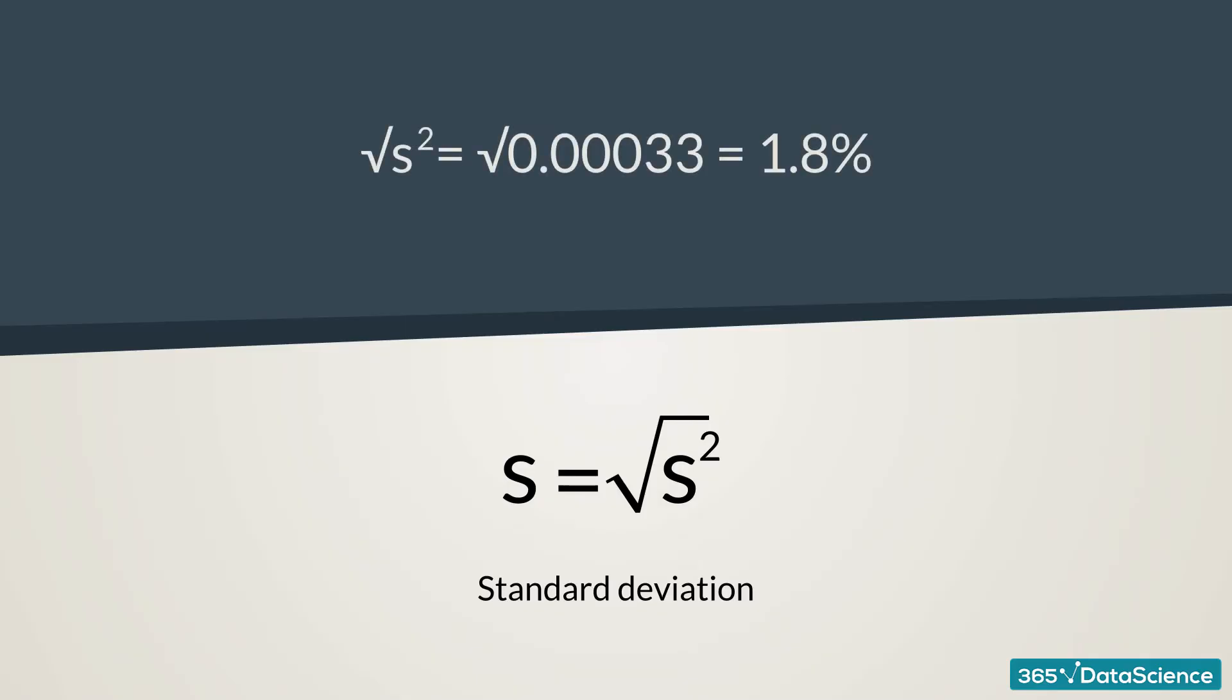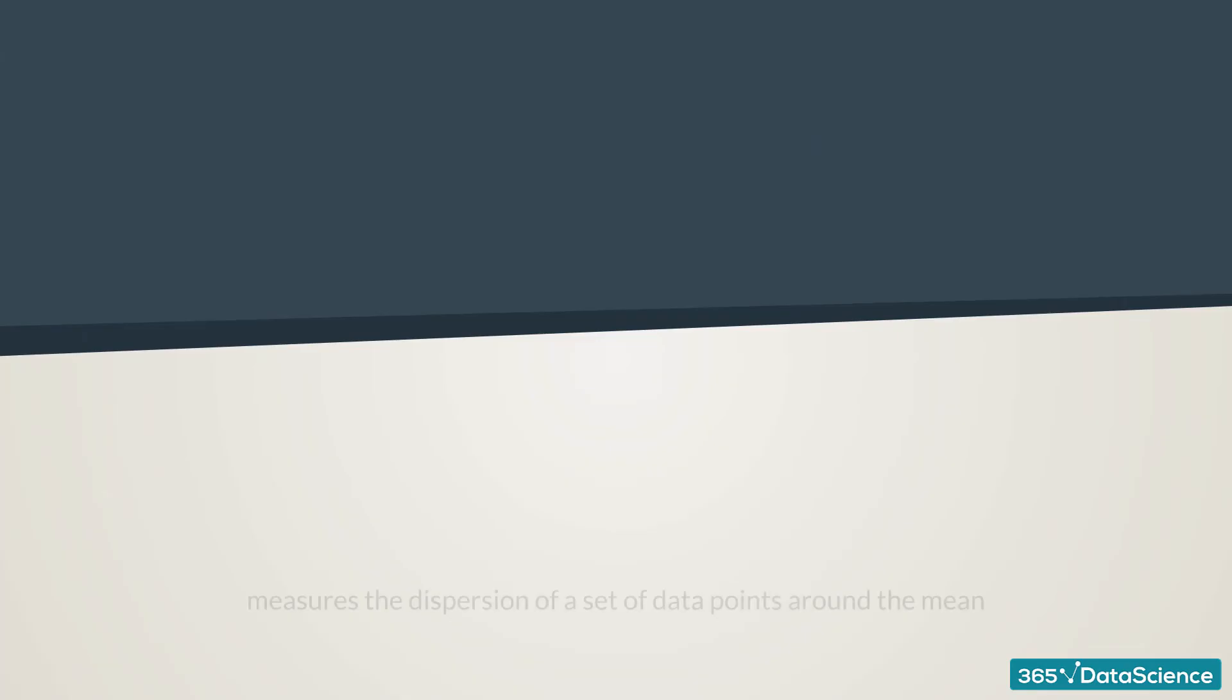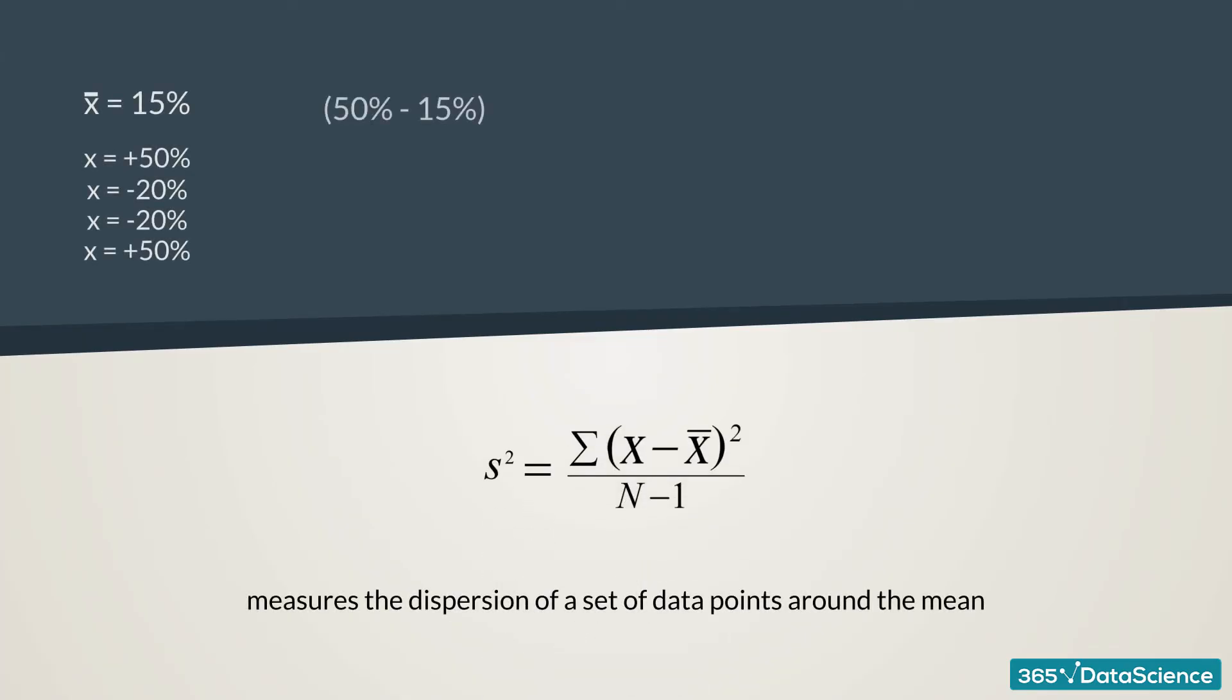Let's calculate the variance of the second set of numbers. We have to use the same formula. For the four observations we have here: (50% - 15%)², (-20% - 15%)², again (-20% - 15%)², and finally (50% - 15%)². Let's sum the four components.